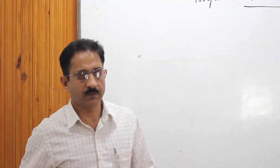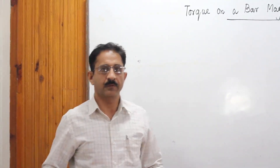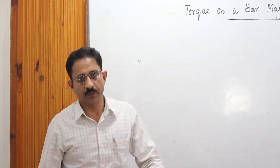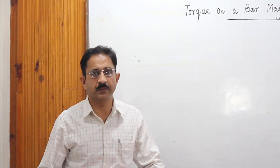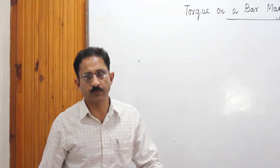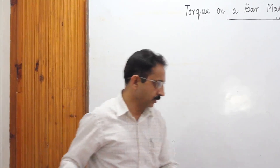Welcome to this lecture. Today's topic is torque on a bar magnet in a uniform magnetic field. A uniform magnetic field has the same magnitude and direction at every point. Torque is the capability of a couple to rotate a body — rotational dynamics tells us there must be a couple, which is two equal and opposite forces acting at two different points on the body.